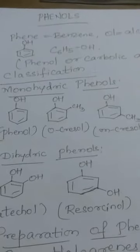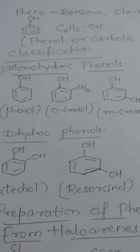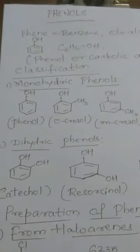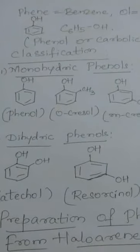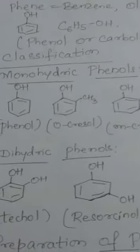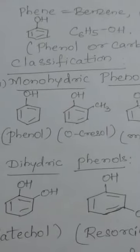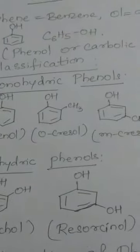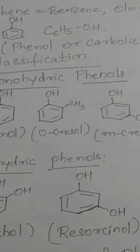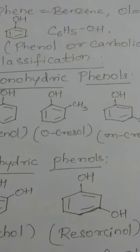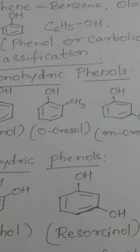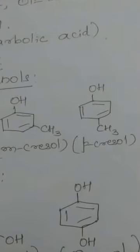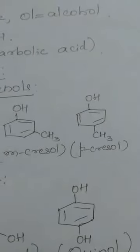Next is to know the classification of phenols. Phenols are classified as monohydric or dihydric phenols depending on whether they contain one or two hydroxy groups. Monohydric phenols contain one hydroxy group directly bonded to the aromatic ring. The first member itself is the example — phenol, C6H5OH. Other examples are orthomethylphenol, with the common name ortho-cresol, which has a methyl group directly bonded to the aromatic ring along with the hydroxy group. The other isomers are meta-cresol and para-cresol.